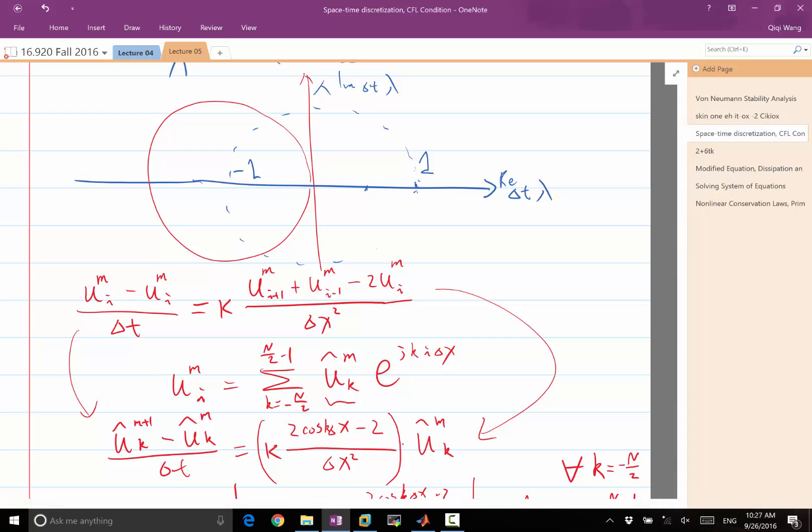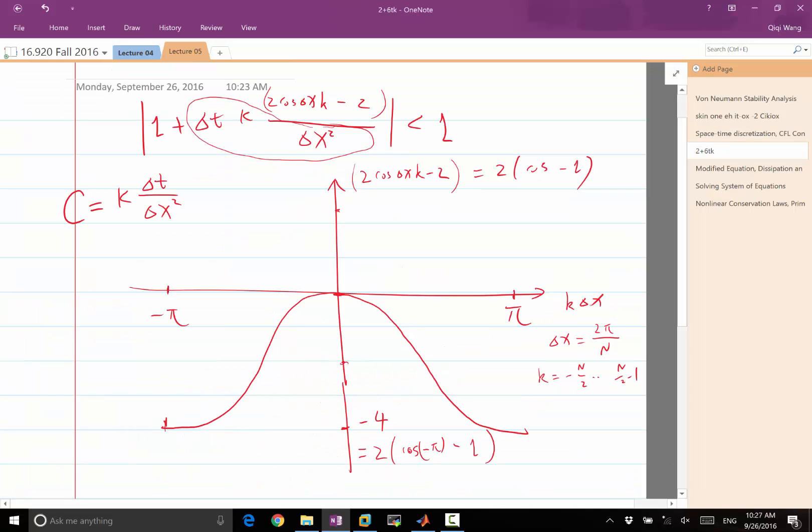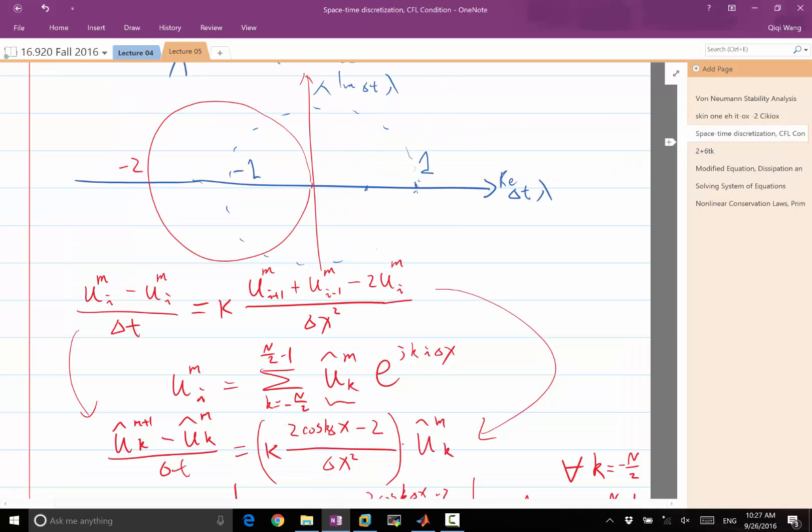The circle goes from minus 2 to 0. Also, this is always a real number, so I want to make sure that the number lies within that range.